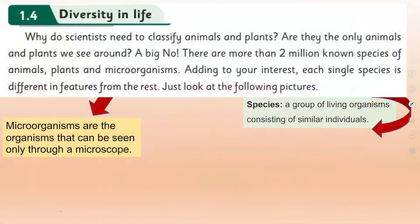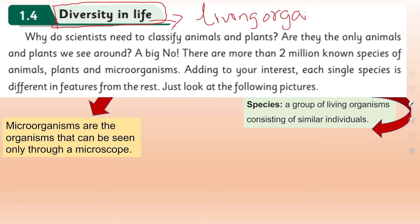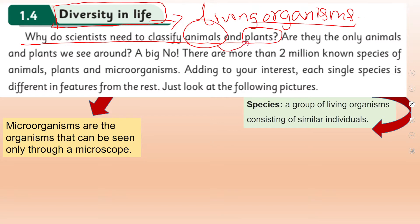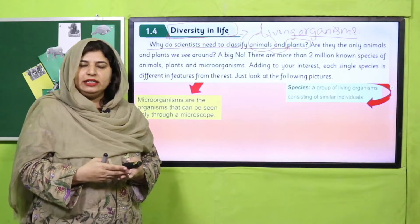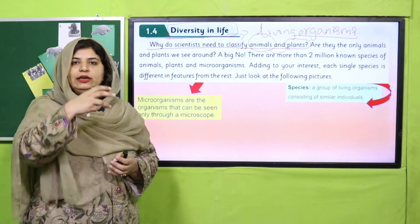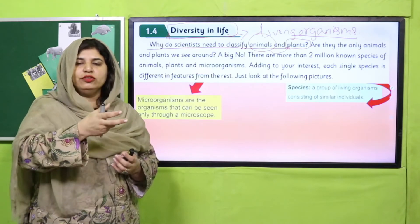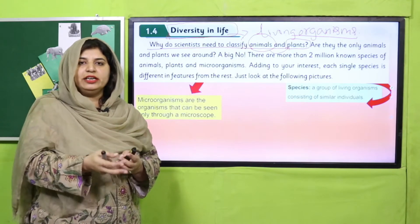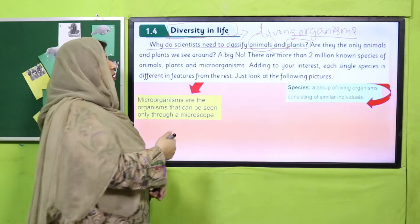It means that there are variations among human beings also. We are all human beings, but every person is different. This is what is called diversity or variation, and this is the topic of our lesson today. So let us start: what is diversity in life? Life means the life of living organisms, and in living organisms you have plants and animals. Why do we need to classify animals and plants? Because animals are a huge group and all are different, so we need to group them to identify shared characters.